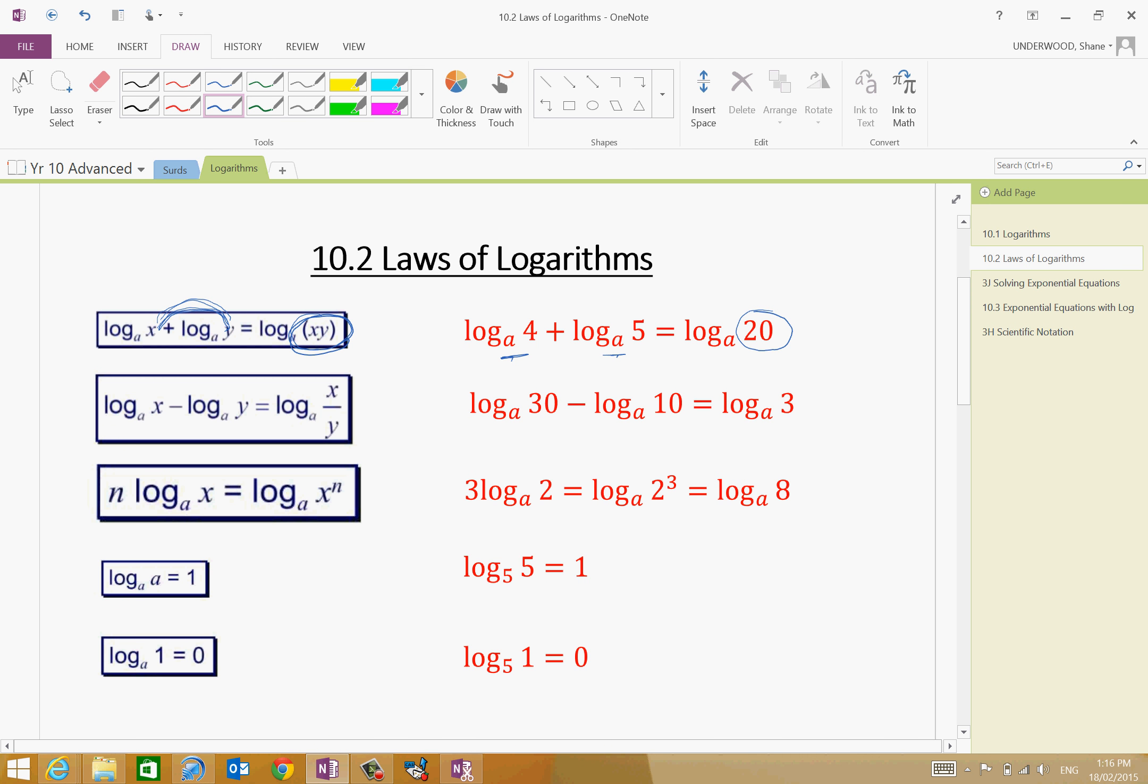The second law is, and it's almost, if you know law 1, it's sort of obvious that law 2 is the opposite. If I'm subtracting two logs of the same base, notice these are the same, then I divide this. 30 divided by 10 is equal to 3.